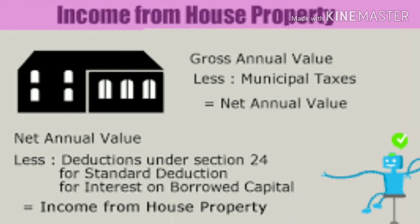After arriving at the Net Annual Value, we apply standard deductions and interest on loan. For let-out property, the standard deduction is 30% of the Net Annual Value. We also deduct interest on loan, including interest on the pre-construction period. These deductions give us the final Income from House Property.